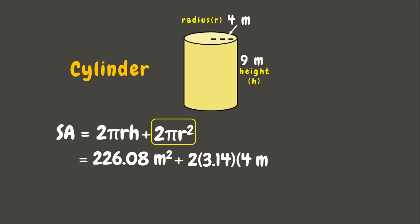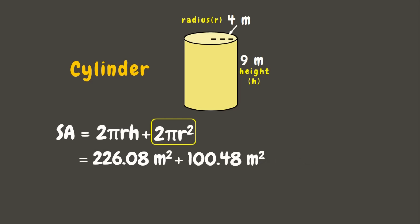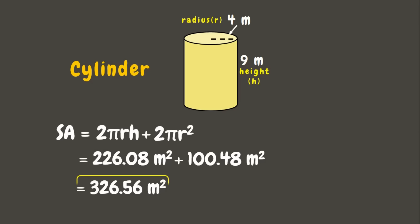Next, we have 2πr squared — that will be 2 times pi (3.14) times the square of the radius, which is 4 meters times 4 meters. Solving this gives 100.48 square meters. Adding the two areas, the answer is 326.56 square meters. This is the surface area of our cylinder. Wonderful!